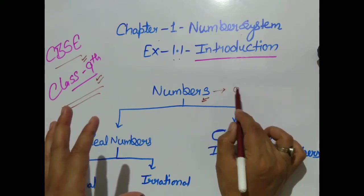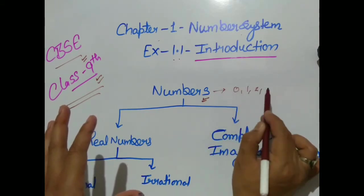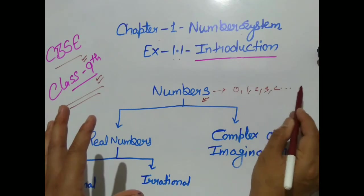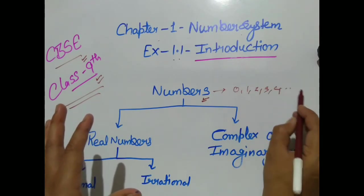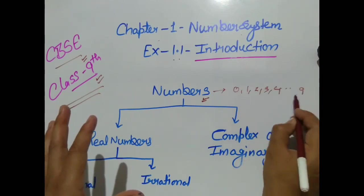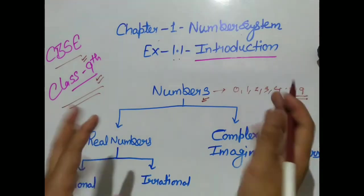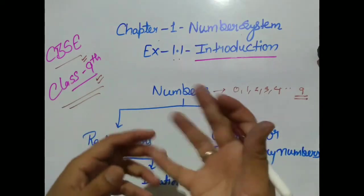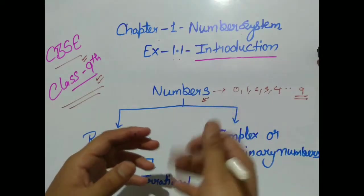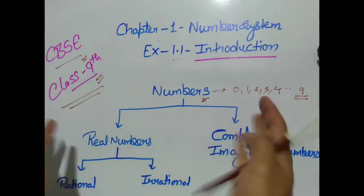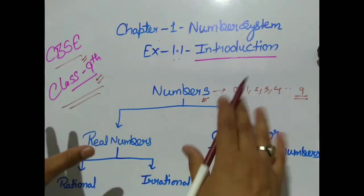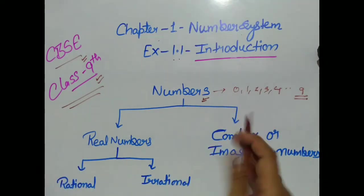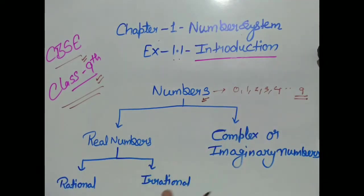Numbers are 0, 1, 2, 3, 4, and so on up to 9 — जो आपको digits होती हैं, तो आपको पता है।